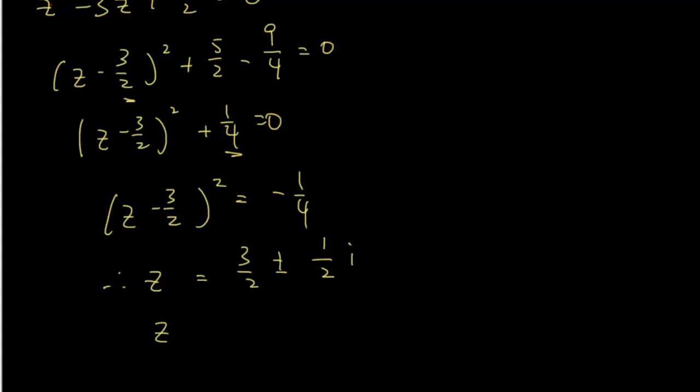z is equals to 3 over 2 plus or minus 1 over 2i. Another way to say that is just 3 plus or minus i over 2.